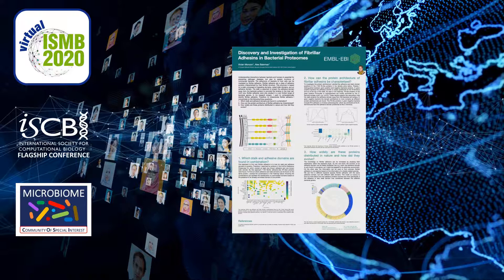The aim of my PhD project is to computationally detect fimbrial adhesins in bacterial proteomes, but to do this I first need to characterize them. I focus on three main questions: which stalk and adhesive domains are found in combination? Secondly, how can the protein architecture of fimbrial adhesins be characterized? And thirdly, how widely are these proteins distributed in nature and how did they evolve?